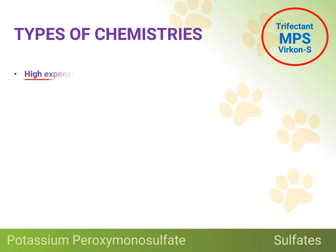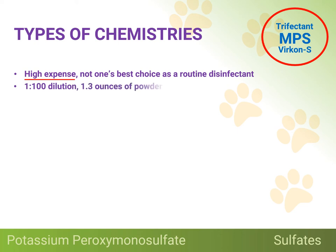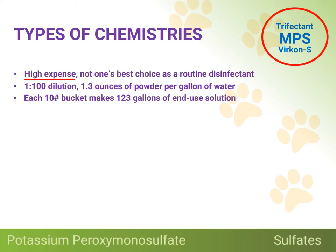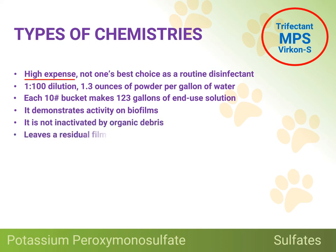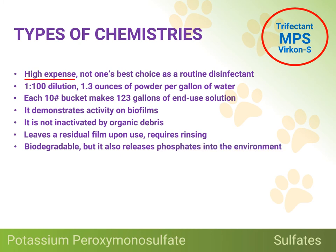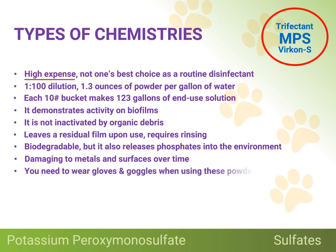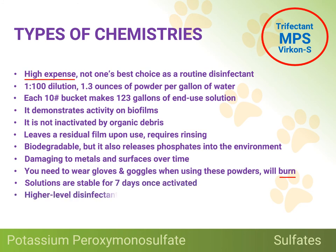Potassium peroxymonosulfate is found in Trifectant and Vercon-S. It is a higher level disinfectant and one of the few disinfectants that are effective on porous surfaces. However, it is very acidic, having a pH of 2.5, and the powder is very corrosive. Though effective, due to its high expense it is not one of the best choices for use as a routine disinfectant. A 1-to-100 dilution is required, made by mixing 1.3 ounces of powder per gallon of water. Each 10-pound bucket makes about 123 gallons of end-use solution. It does demonstrate activity on biofilms and is not inactivated by organic debris, but it does leave a residual film upon use, therefore it requires rinsing to remove the film. It is biodegradable, but it also releases phosphates into the environment. Because the powder is so corrosive, it is damaging to metals and surfaces over time. You need to wear protective gloves and goggles when using these powders as the powders will burn. Solutions are stable for seven days once activated. As a higher level disinfectant, this is an appropriate product to have on hand in the event of disease outbreaks and/or for occasional use in isolation wards, so long as you take appropriate precautions when using the powder.